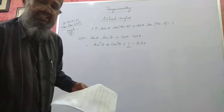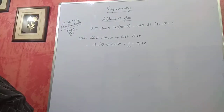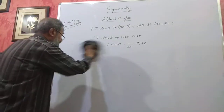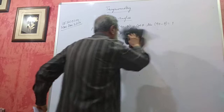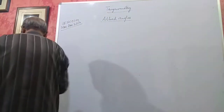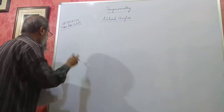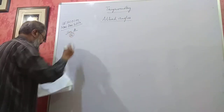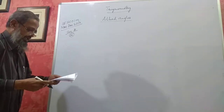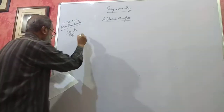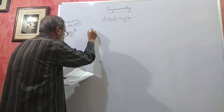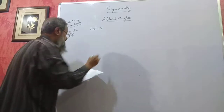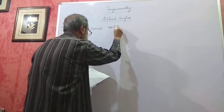In Section B, problem number 21, five marks. Evaluate — that is, find the value of — cos(570°) · sin(150°) · sin(330°) · cos(390°). What is the value of this expression?